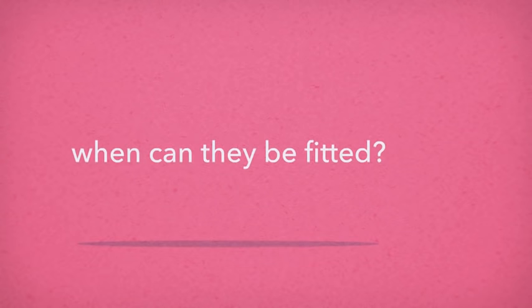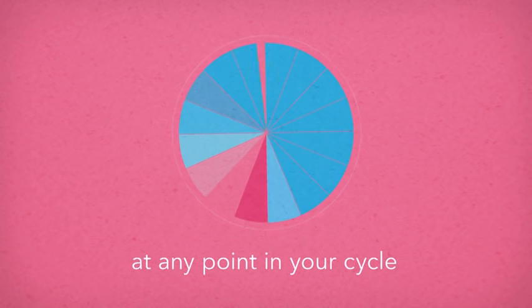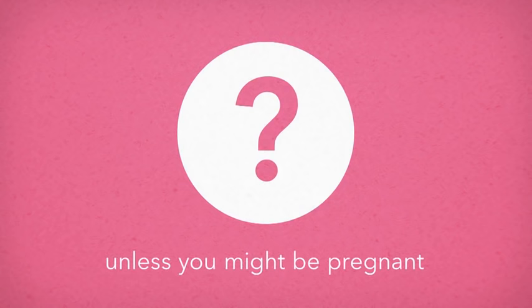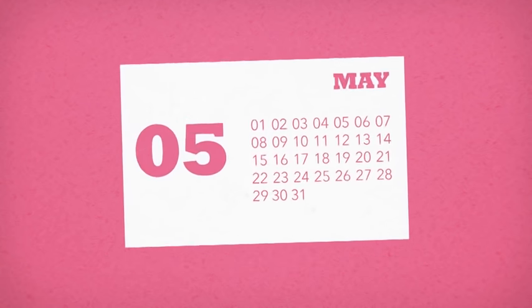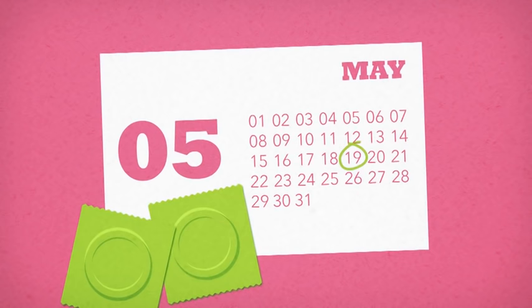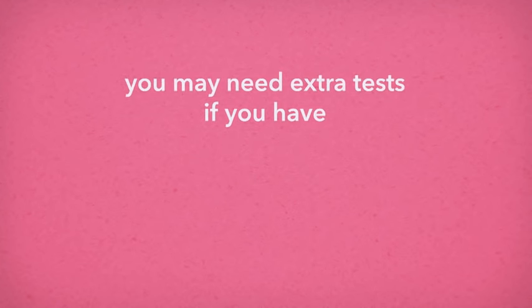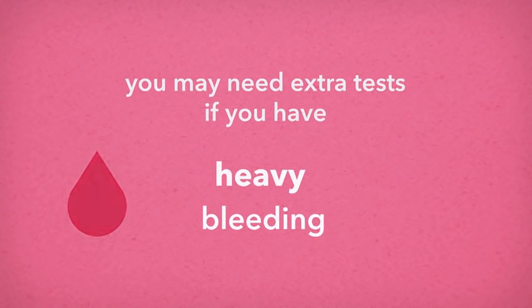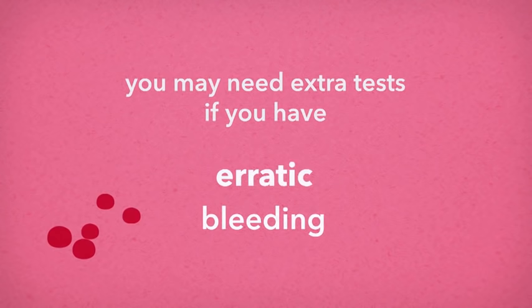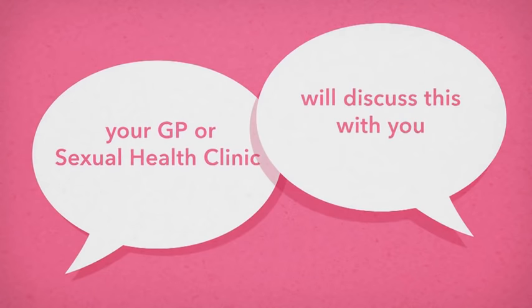When can they be fitted? The IUD and Mirena can usually be fitted at any point in your cycle unless you could be pregnant. We therefore ask that you do not have unprotected sex after your last period until your appointment. Some women need extra tests before having an IUD or Mirena fitted, for example, women with very heavy or unpredictable bleeding. Your GP or sexual health clinic will discuss this with you and organize extra tests if they are needed.